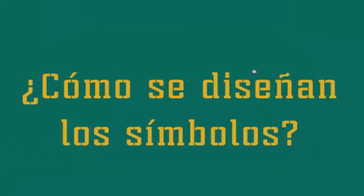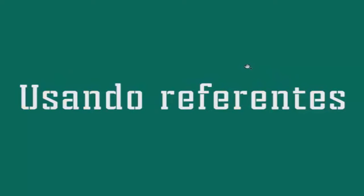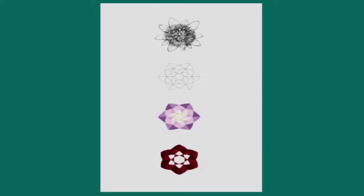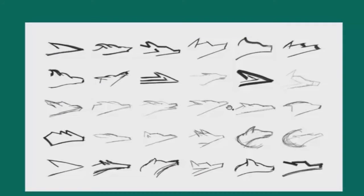¿Cómo se diseñan los símbolos? ¿Cómo se llega a un proceso de hacer un símbolo efectivo y funcional? Básicamente utilizando referentes. Los referentes ayudan a que la gente asocie, o que tenga un cierto tipo de reconocimiento entre la marca y lo que es un objeto o un elemento, o el beneficio que quiere permitir el producto. Aquí estamos viendo el proceso de cómo se realiza un símbolo, partiendo de elementos naturales existentes en nuestra vida cotidiana, hasta llegar a una figura que simplifica esa figura real pero que se vuelve un elemento representativo.